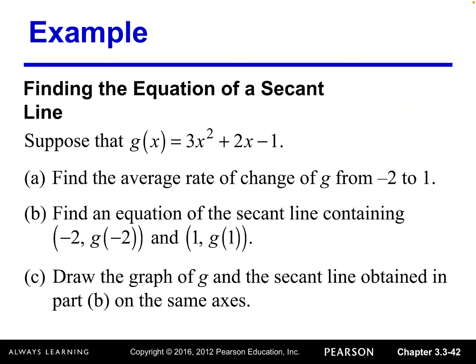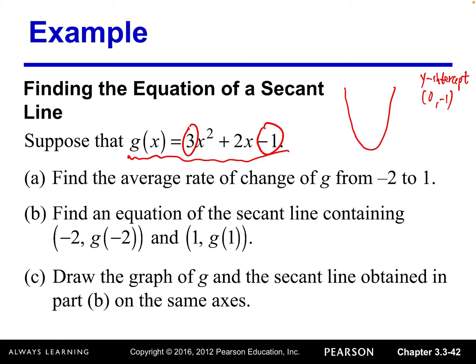Now let's look at another example. We have g(x) = 3x² + 2x − 1. This is a quadratic function with leading coefficient 3, so it's a parabola opening upward. Since c = −1, the y-intercept is (0, −1) — that's basic information we should know right away without any calculation.